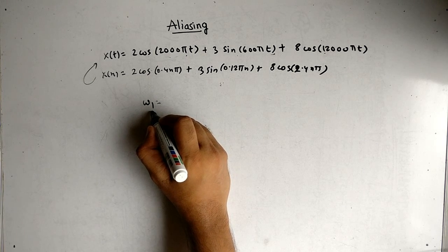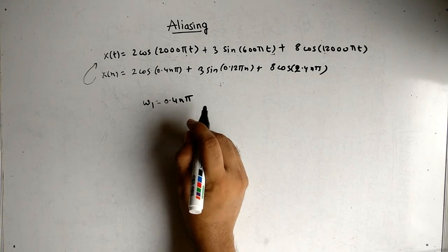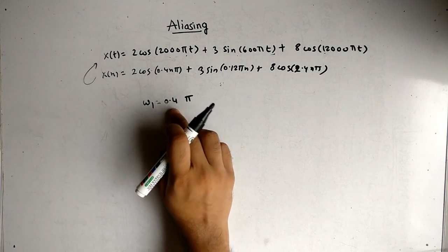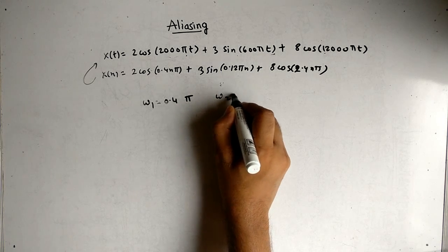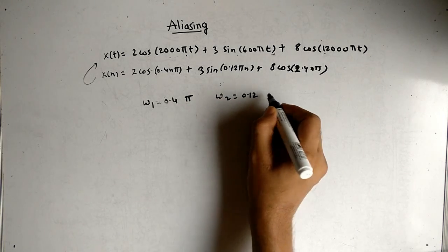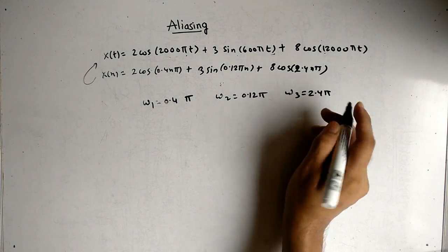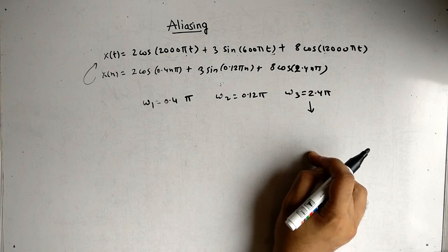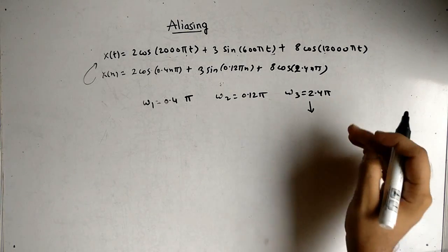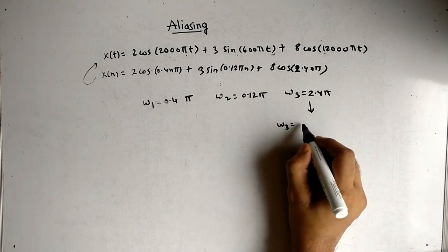Let's say omega 1 is 0.4 pi. Yes it is valid, it is between minus pi to pi. Omega 2 is 0.12 pi. Omega 3 is equal to 2.4 pi. Now you can see there is a problem here, because our range is between minus pi to pi but it is exceeding from that.